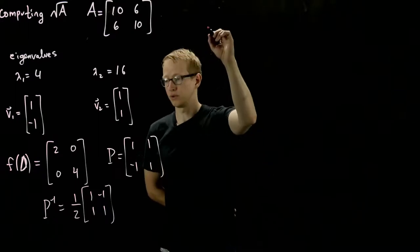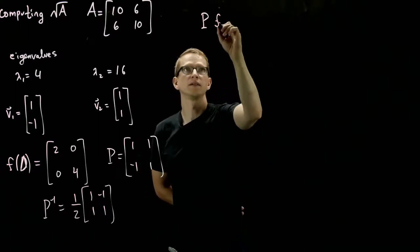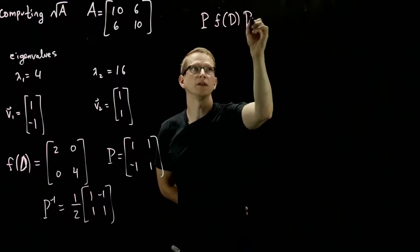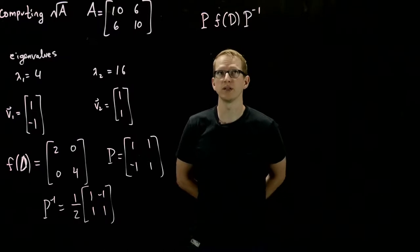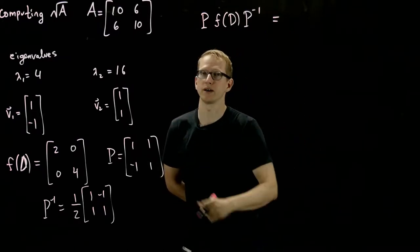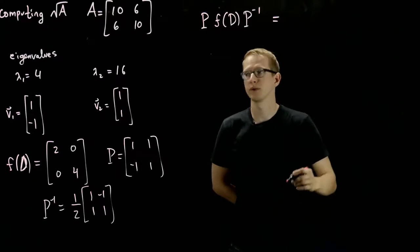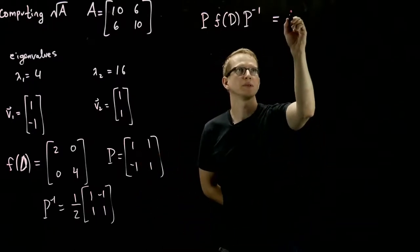So what happens when we compute P, f of D, P inverse? Supposedly, we should get the square root of our matrix, which means that if we square it, then we get back our matrix A. So if we multiply some of these out, I'll skip some of the steps.